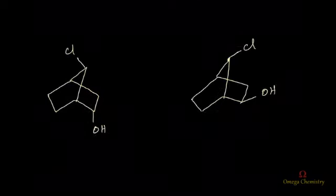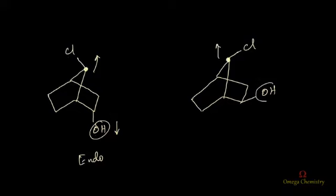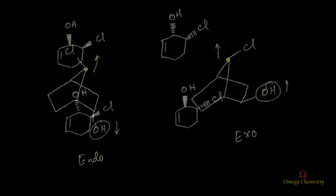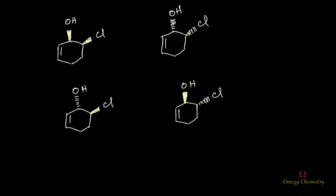Now apply the same concept here. Look at this bridged carbon — this carbon is pointing upward whereas this alkyl group is pointing downside, that's why this is endo. Whereas in the next compound, this bridged carbon is pointing upward and this alkyl group is also pointing upward. Since they are pointing in the same direction, we call this exo.